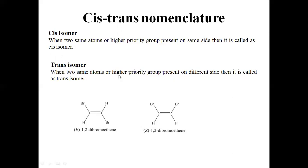When two same atoms or higher priority groups are present on different sides of the double bond, it is called a trans-isomer. For example, consider bromine and another bromine. If the two bromine atoms are present on the same side of the carbon-carbon double bond, it is called a cis-isomer, and the cis-isomer is also referred to as Z. If the same atoms are on different sides, it is called a trans-isomer. So this is cis-1,2-dibromoethene and this is trans-1,2-dibromoethene.